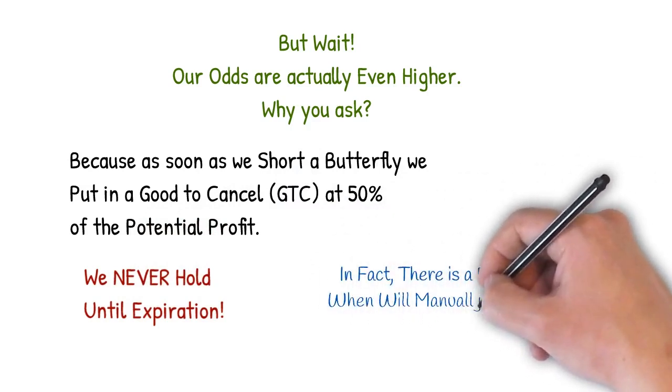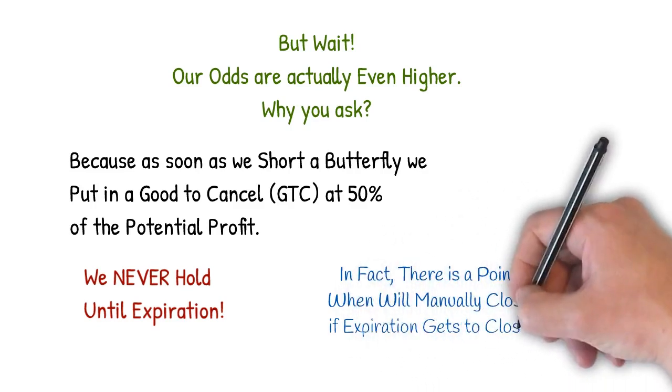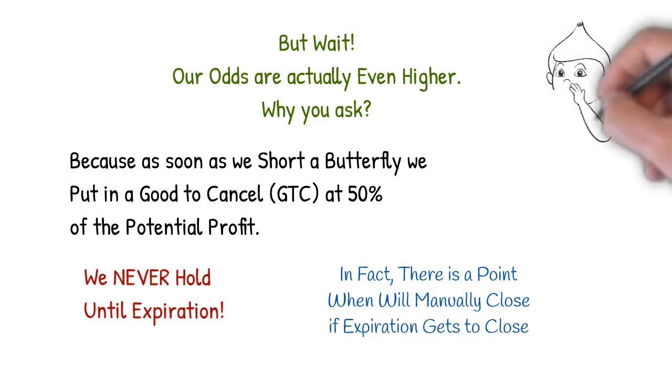We would also like to point out that 87% was just the probability on this particular trade. Typically, when we short a butterfly, we try to get probabilities above 65%, preferably above 70%.